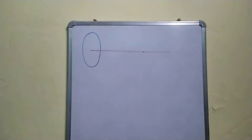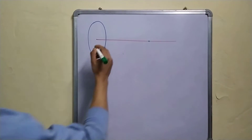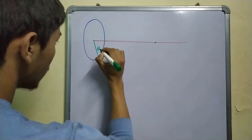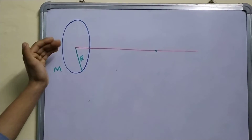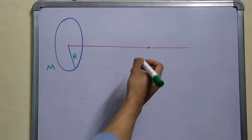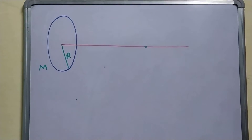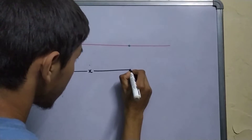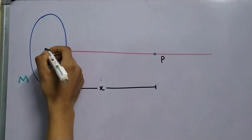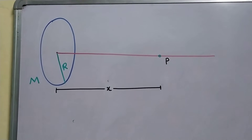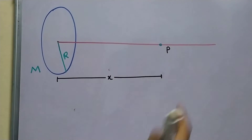Hello everyone. In this video we'll be calculating the gravitational field due to a ring. This is the situation: we have a ring with radius R and total mass M, and we are going to find the gravitational field at a point on the axis of this ring. We need to calculate the gravitational field in terms of x, R, M, and other variables if necessary.